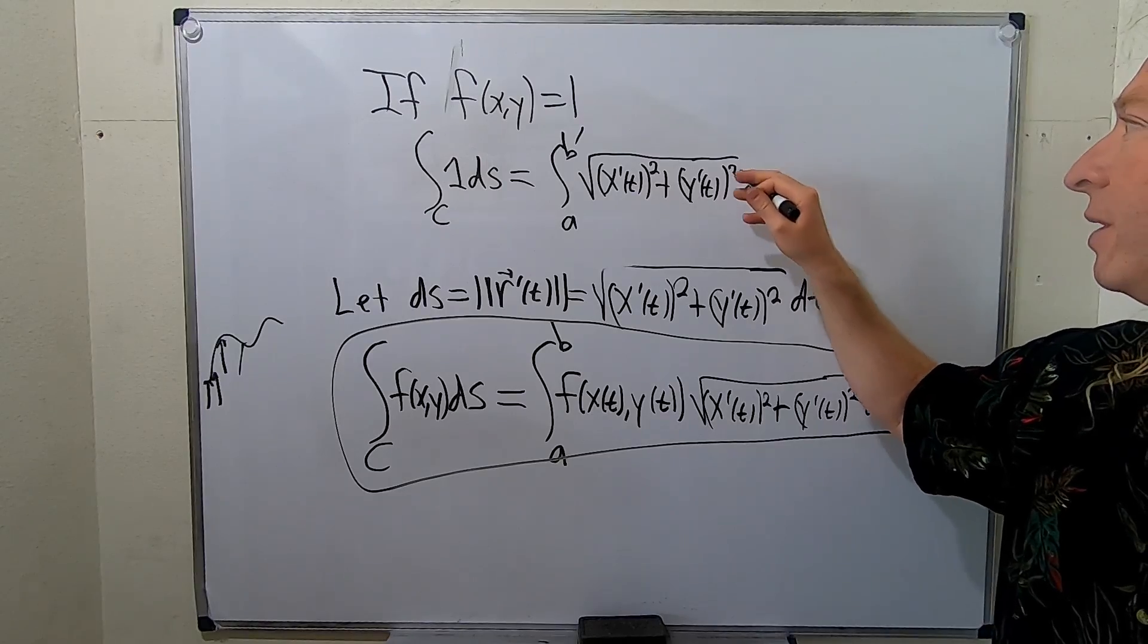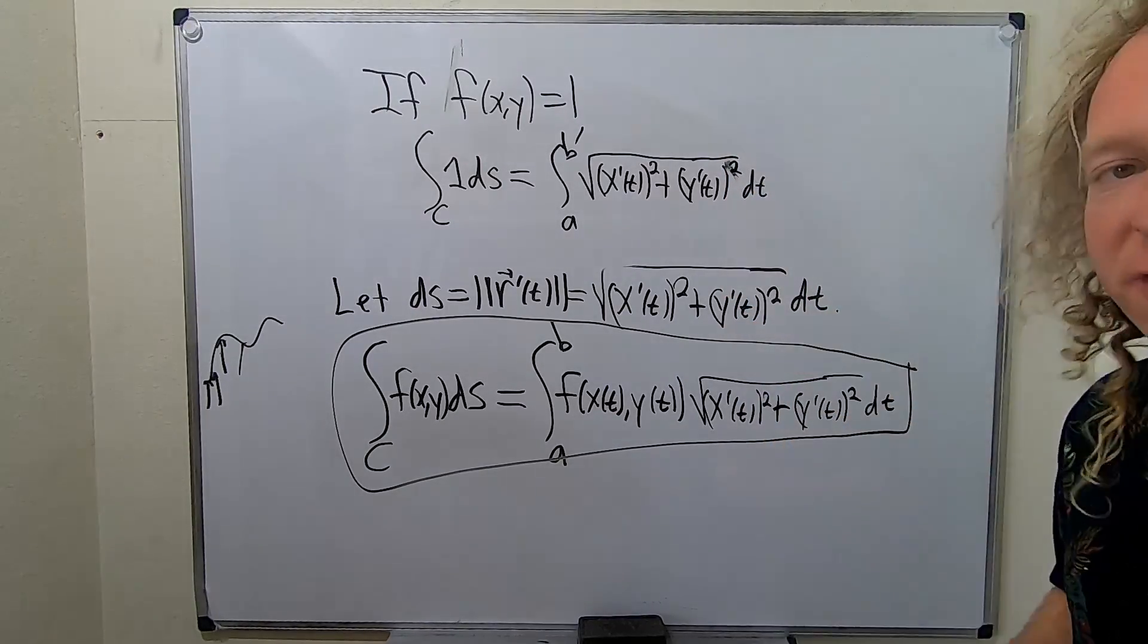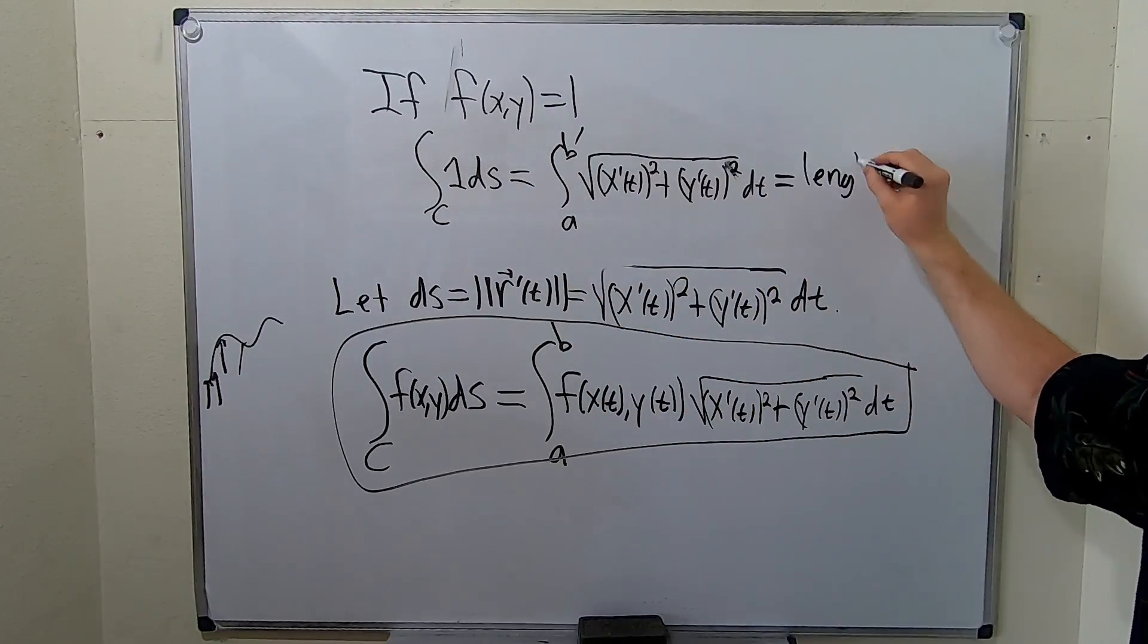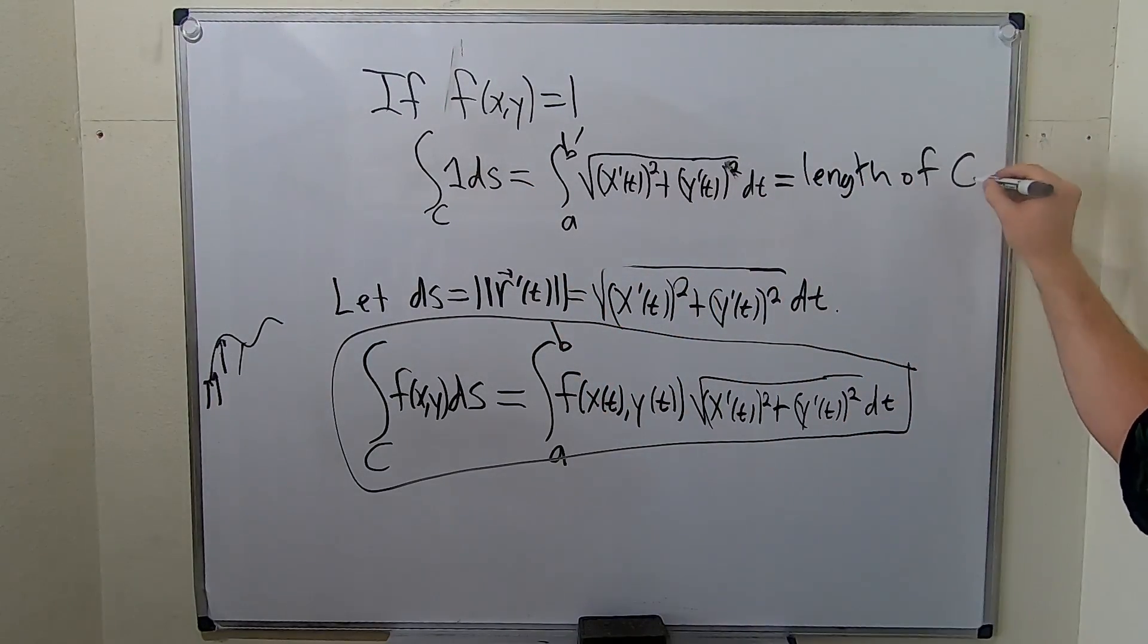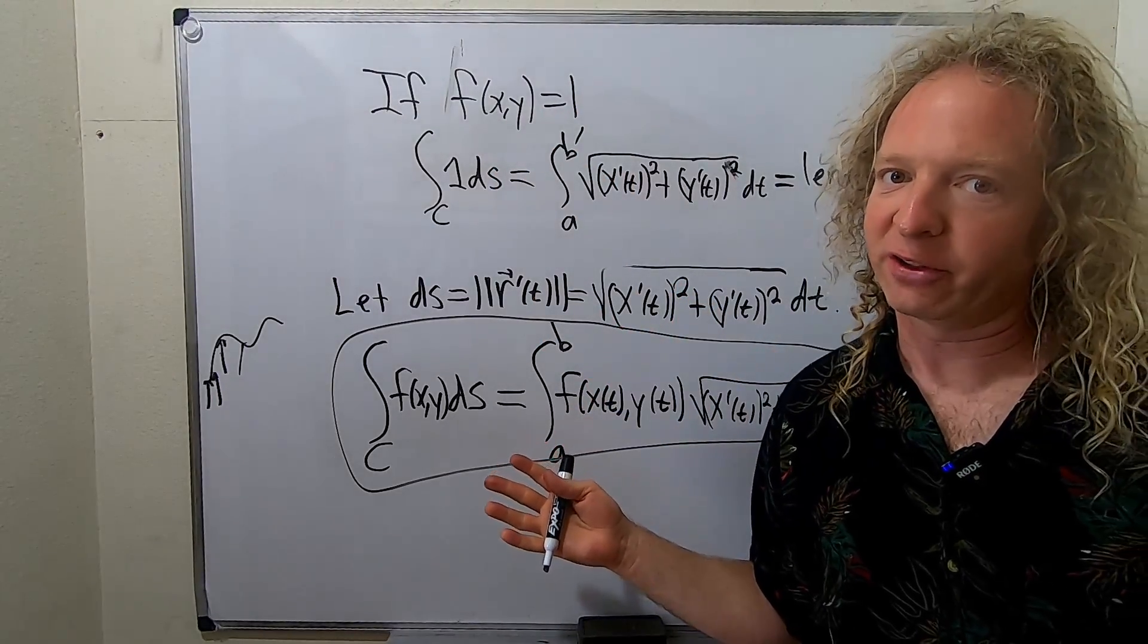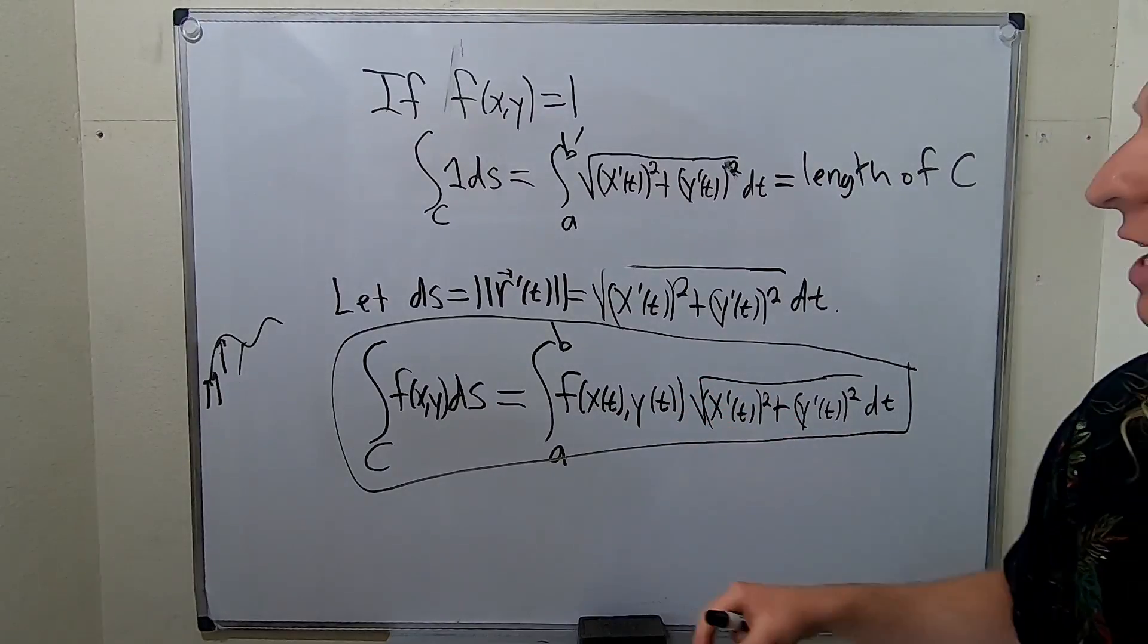And I'd say, hey, this looks kind of familiar. It should, right? This is from calculus two. This is the arc length formula. So this is the length of C. So in the case where f(x,y) is equal to one, it's just the arc length formula. So it reduces to that. So it's kind of cool that that does occur.